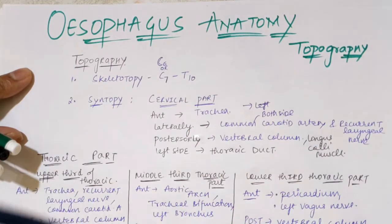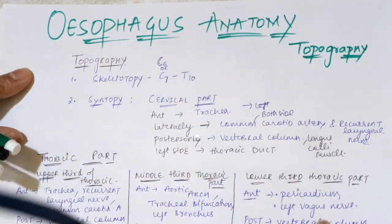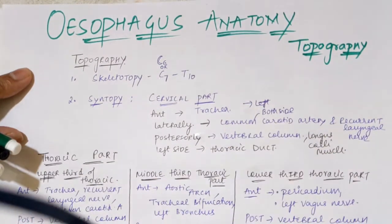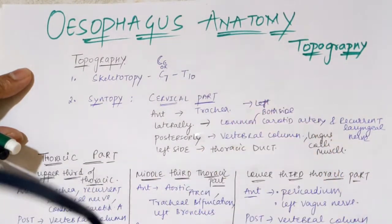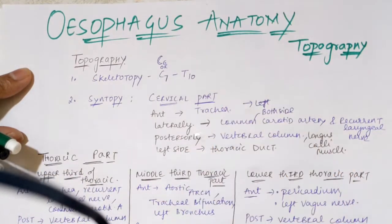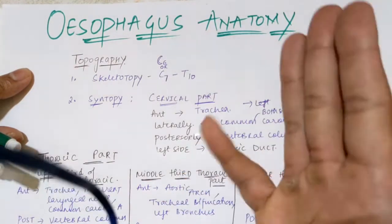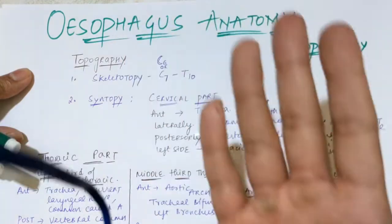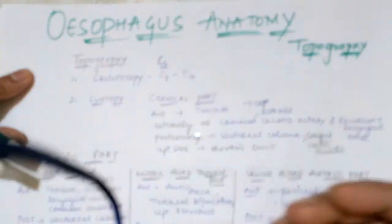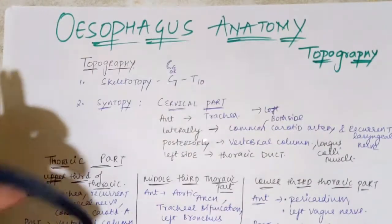The cervical part is in the cervical region, the thoracic part is in the thorax, and the abdominal part is after it pierces the diaphragm and reaches the abdominal area. These three parts will be discussed in detail in the next video. In this video, we will focus on skeletotopy.